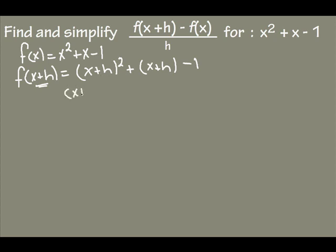My next step is to simplify. So first of all, x plus h squared is x plus h times x plus h. To figure that out, remember we need to FOIL, so we'll get x squared plus xh plus xh plus h squared.